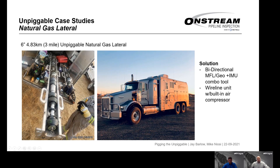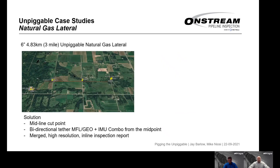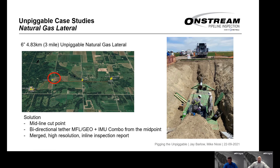Our solution uses our high-resolution combination MFL, geometry, and IMU tool — a bi-directional tool that can run in both directions — deployed with a wireline unit equipped with a tether, wireline, and an air compressor to blow the tool out. Rather than attempting to cut at one end and go all the way through, or going from each end to the middle, we worked out a midline cut point. This shows what the bellhole looked like when we exposed the pipe — a quite large excavation.